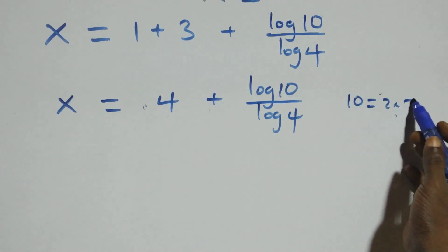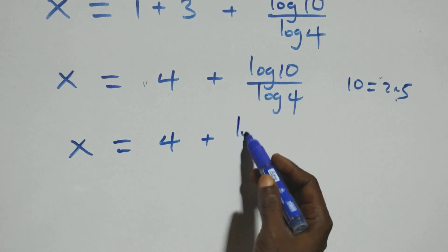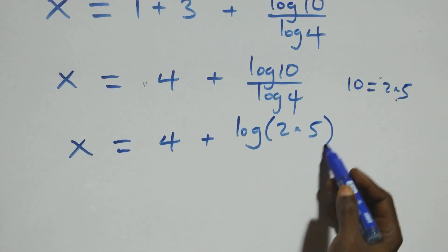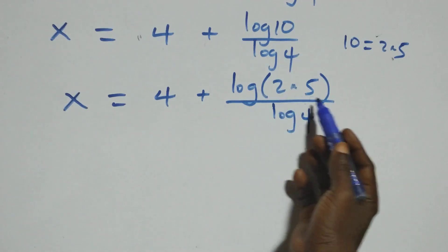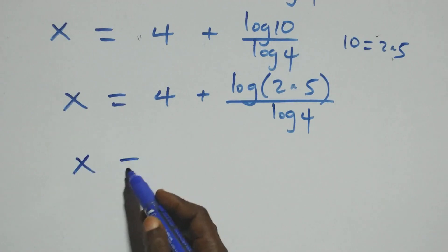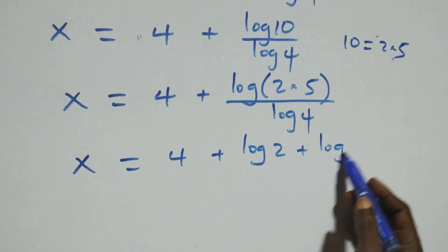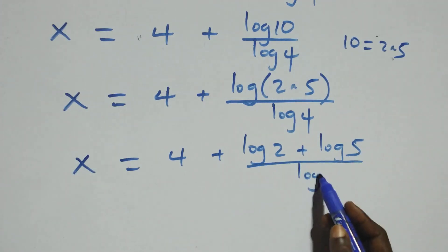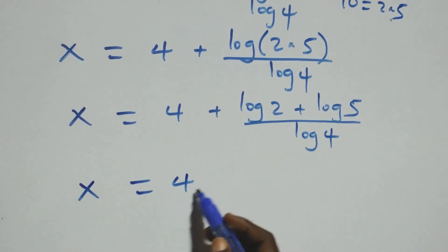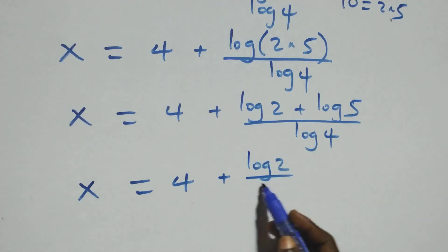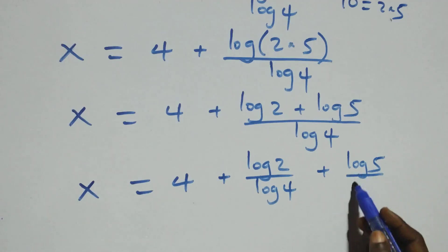10 can be written as 2 times 5, which implies x equals 4 plus log of 2 times 5 over log 4. This also follows the law of logarithms, and we have x equals 4 plus log 2 plus log 5 over log 4. We separate this into two fractions: x equals 4 plus log 2 over log 4 plus log 5 over log 4.